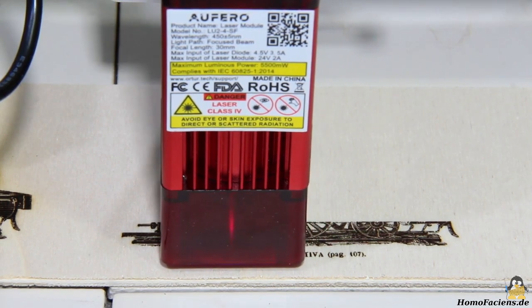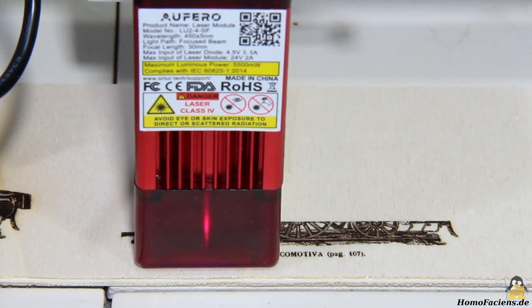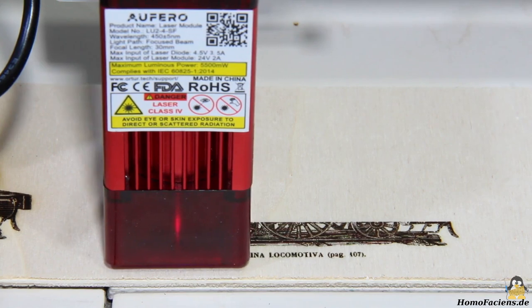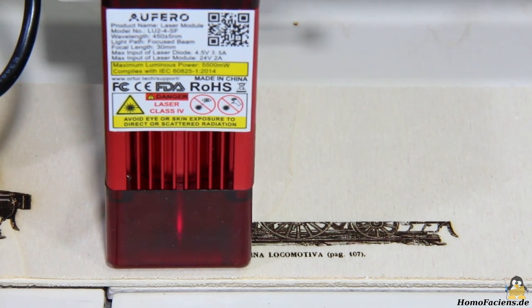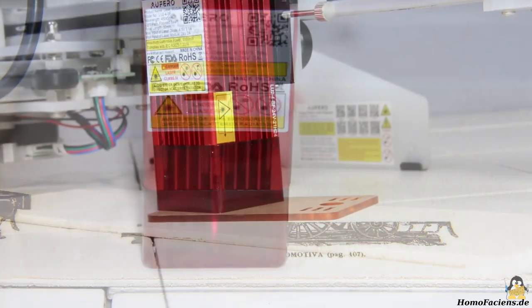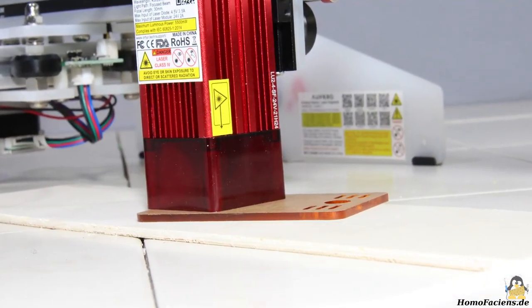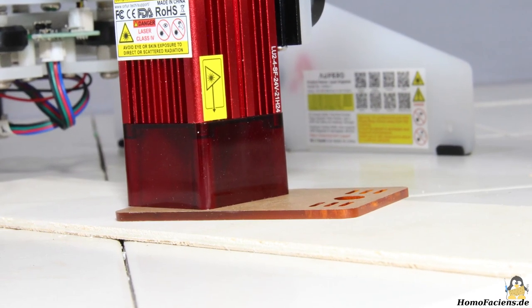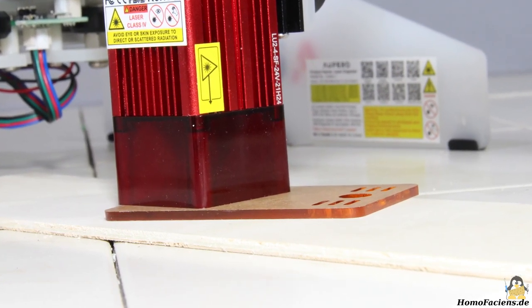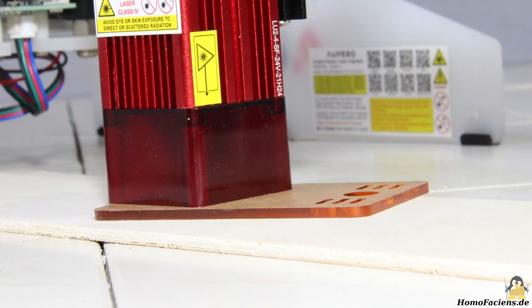The last candidate is the module with the short focal length. Here, the nozzle and cover combination is held in place at the lower end with magnets. In contrast to the two previous modules, a 3mm thick piece of acrylic plastic must fit between the lower edge of the nozzle and the workpiece for correct focusing.